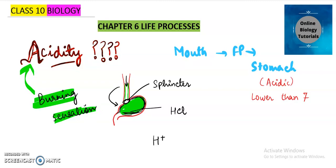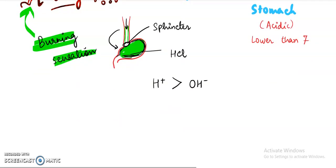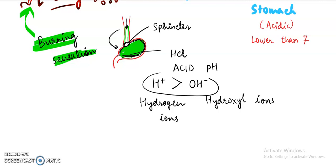Now we already know that acidity is due to the acidic pH. And whenever there is acidic pH, H+ ions are more than OH- ions or hydroxyl ions. These are hydrogen ions which are also known as hydronium ions and these are hydroxyl ions.